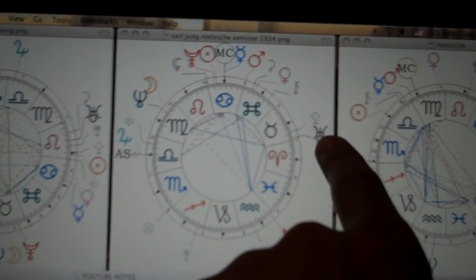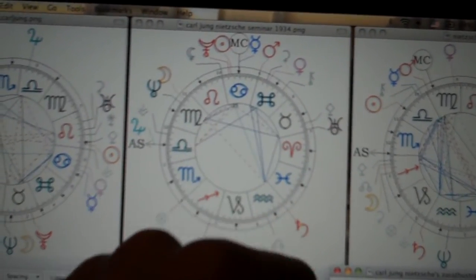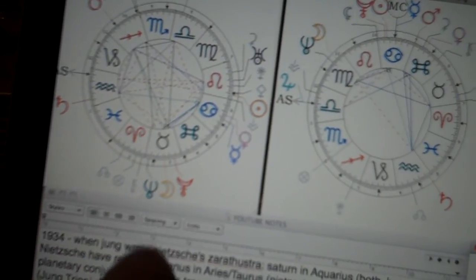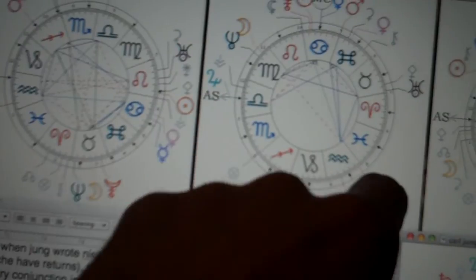And that Uranus on the Aries-Taurus cusp is about to conjunct every single placement that Jung has in Taurus, which is all these three planets. So he'll be having a Uranus conjunct Neptune-Moon-Pluto transit during these five years.